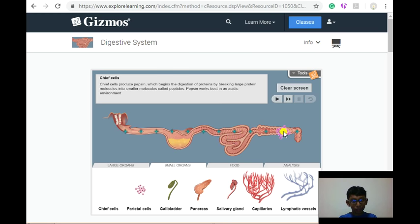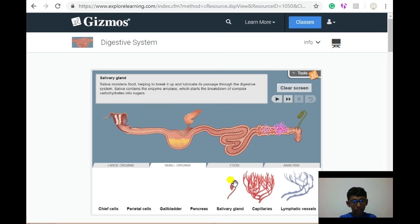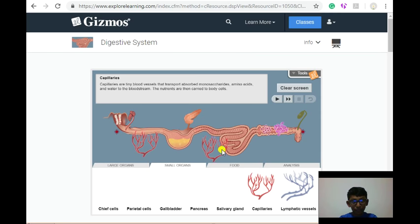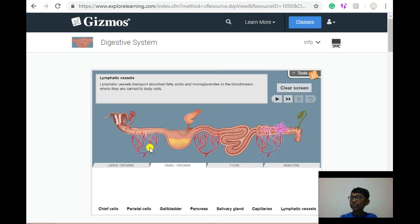So, the chief cells goes in the back of the large intestine. The parietal cells goes in the front of the large intestine. The gall bladder goes in the last on the rectum. The pancreas, everyone knows it goes on the stomach. The salivary glands goes in the mouth side. The villi are three, so I need to keep it in three different places. The lymphatic vessels are here and here.